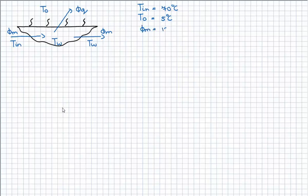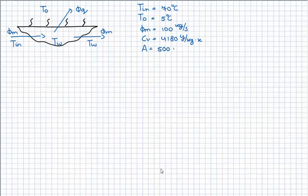Some numbers are given here: the water flow rate Vm, the outside temperature, the mass flowing in and out, the heat capacity of the water inside the bath, and the contact area between the air and the bath. We also know that the heat flux is an alpha constant times the area times the difference in temperature between the bath and the outside temperature.